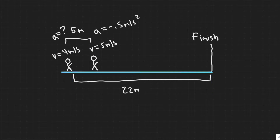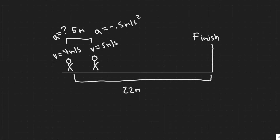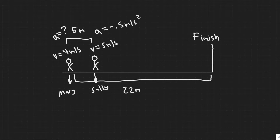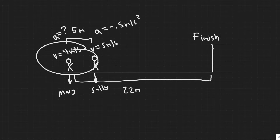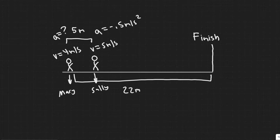First thing we've got to draw what's going on here. So this right here is Mary, and this is Sally. They tell us that when Mary is 22 meters from the finish line, she's traveling with a velocity of 4 meters per second and she is 5 meters behind Sally, so the distance between the two is 5 meters.